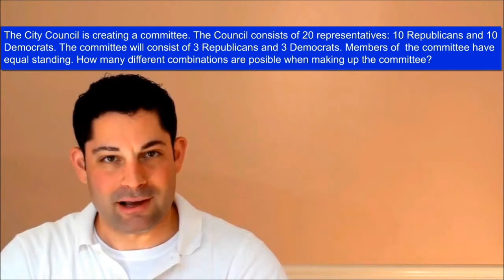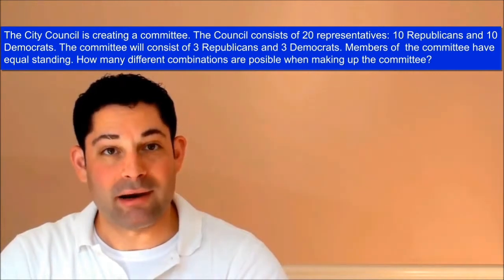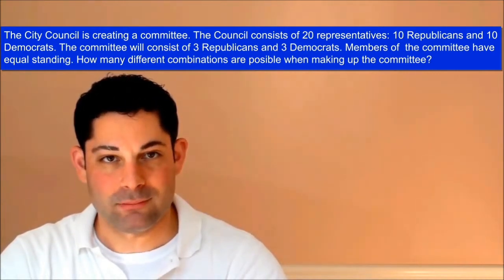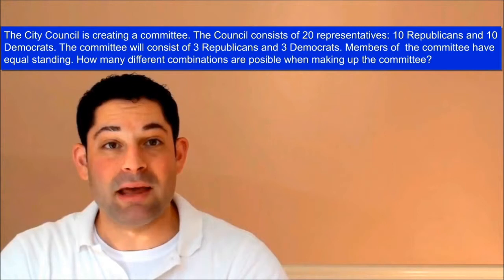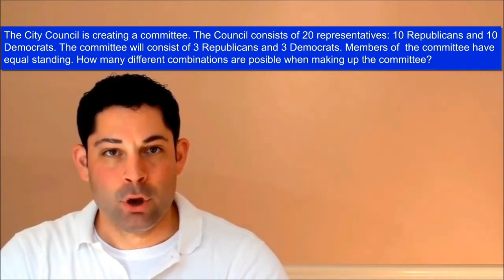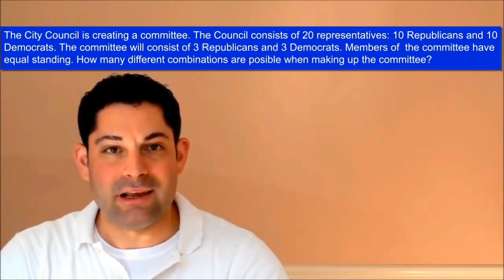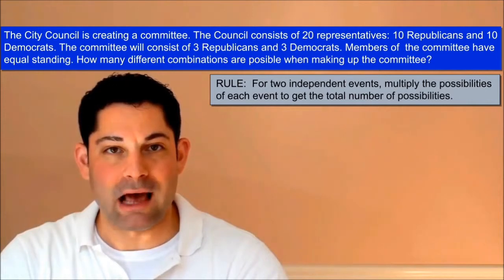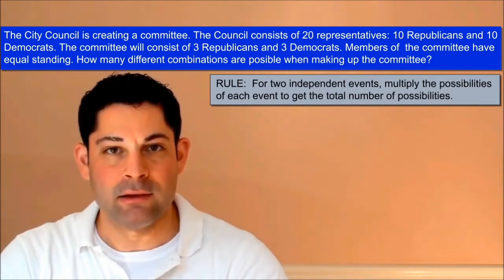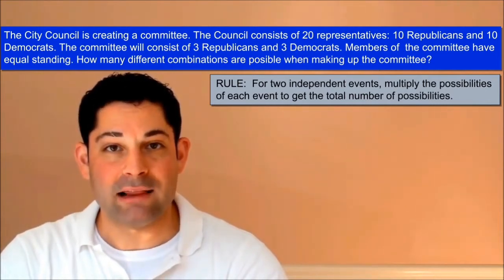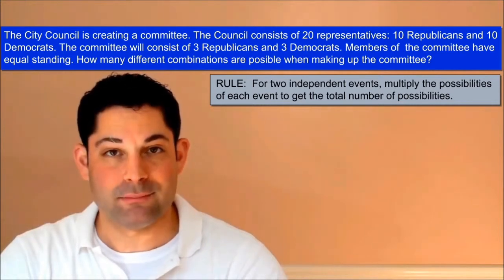How we choose the Democrats has no bearing on how the Republicans are chosen. The arrangements are independent of each other. When we encounter independent arrangements, we simply multiply the outcome of each independent event in order to find the totality of the arrangement of the two sets.